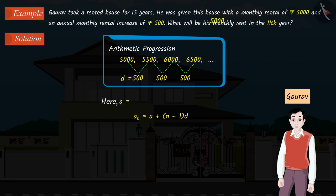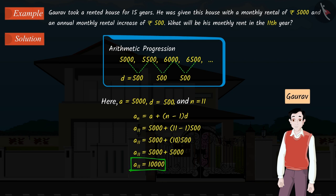Here, the first term A equals 5000, the common difference D is 500, and n equals 11. Therefore, the 11th term of the AP comes out to be Rs. 10,000. So, the monthly rent for the 11th year will be Rs. 10,000.